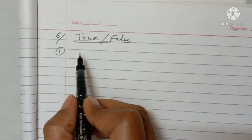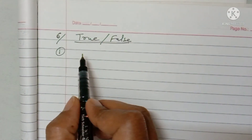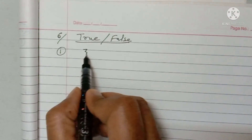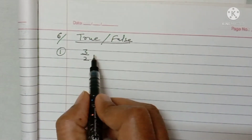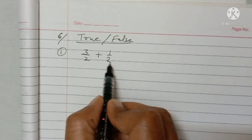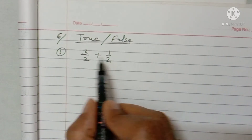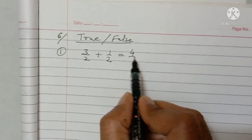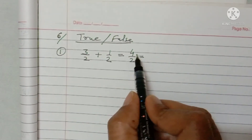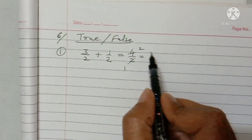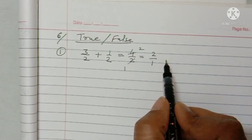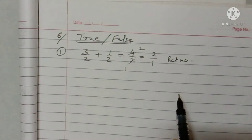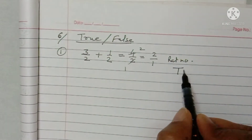First: the sum of two rational numbers is rational. Take an example: 3/2 (rational) + 1/2 (rational) = 4/2, which is a rational number. So this is a true statement.